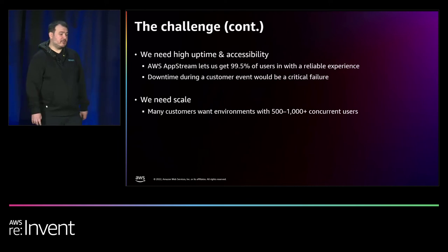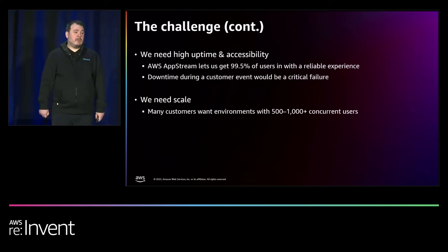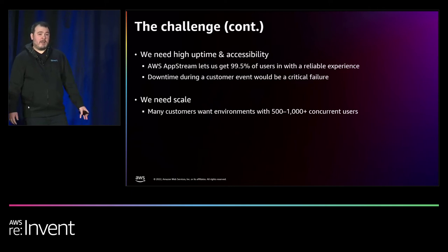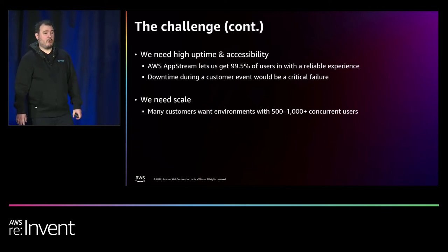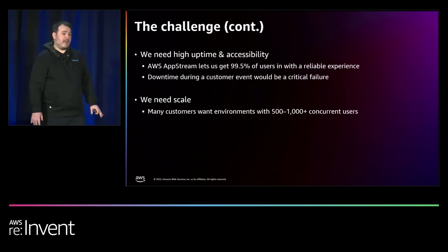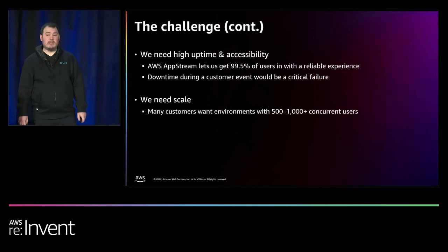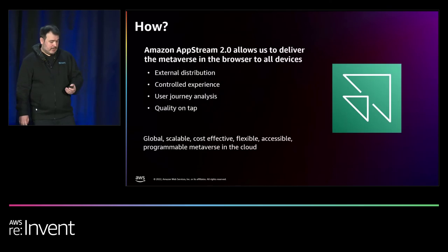We also need scale. There are not many providers who can provide this kind of streaming service at the scale we need. 500 to 1,000 users is bread and butter for us, and there are not many providers with 500 to 1,000 GPU-capable machines ready to go at once. AppStream does, and that's another big factor for us.